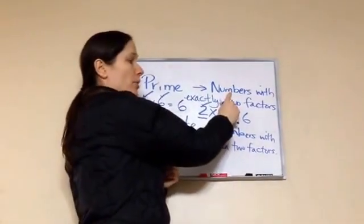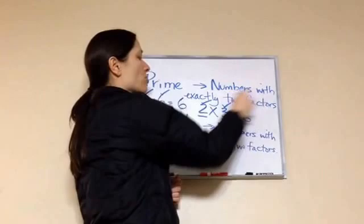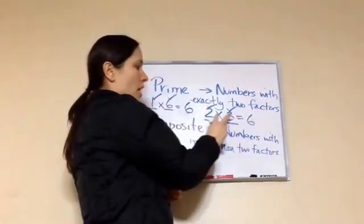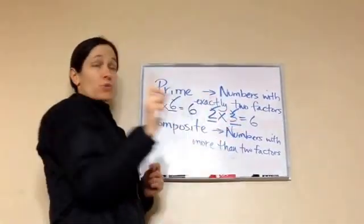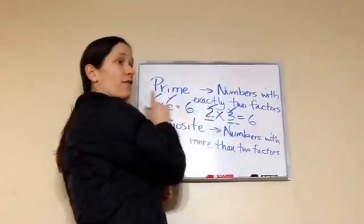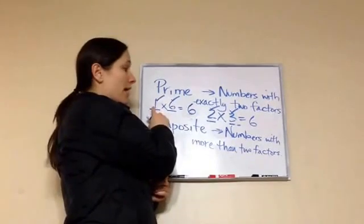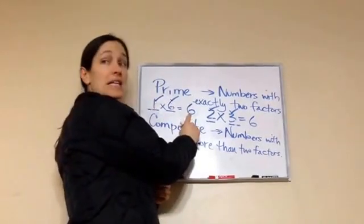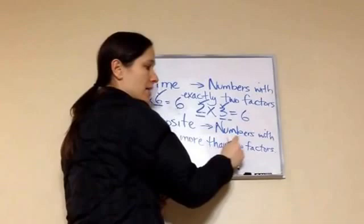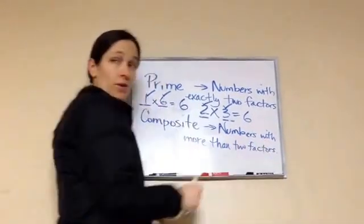So there are four numbers. Numbers with exactly two factors. So this would be a composite. This would be a composite because it has more than two. One, two, three, four that equals six. Do you get it? So six is a composite number because it's a number with more than two factors.